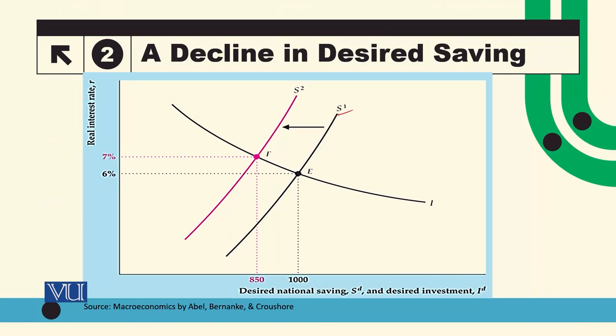Originally at curve S1, if government purchases increase, desired national savings would be reduced and the savings curve shifts leftward. Initially, the equilibrium was at point E, where the goods market was clear at a 6% interest rate with aggregate demand and supply in the goods market equal.